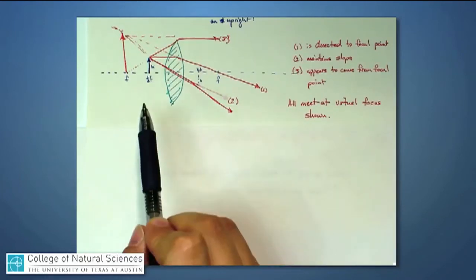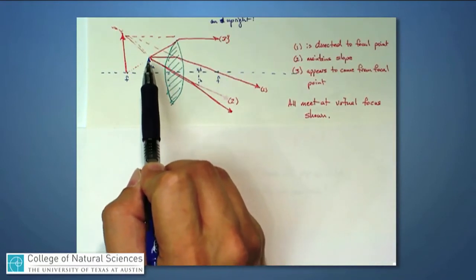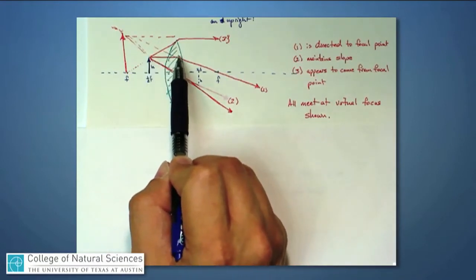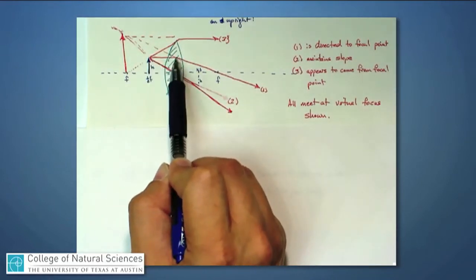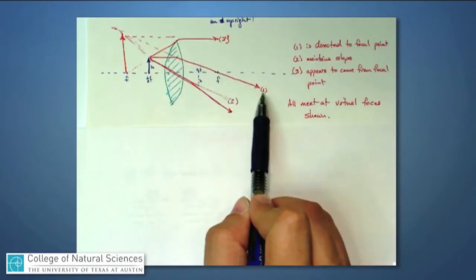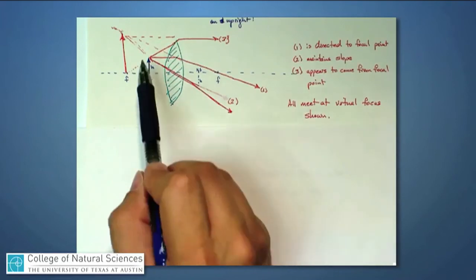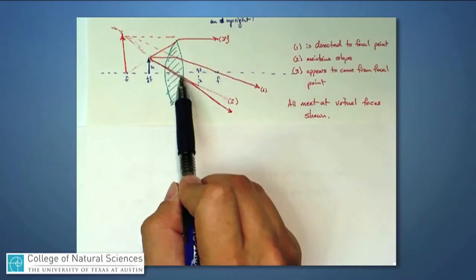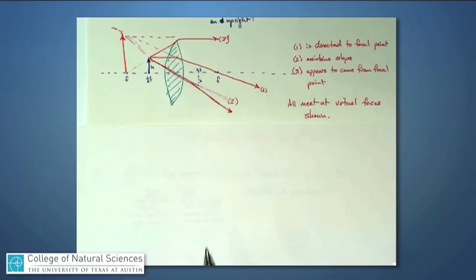Ray number one is the one that is going to go in parallel to the center axis of the whole system. So when it goes in parallel, remember it gets directed to the focal length. So it keeps on going down. Number two is the one that goes through the center axis, and it's undeflected, so that should be a straight line right there. And my apologies for my artistry, but that should be a straight line.